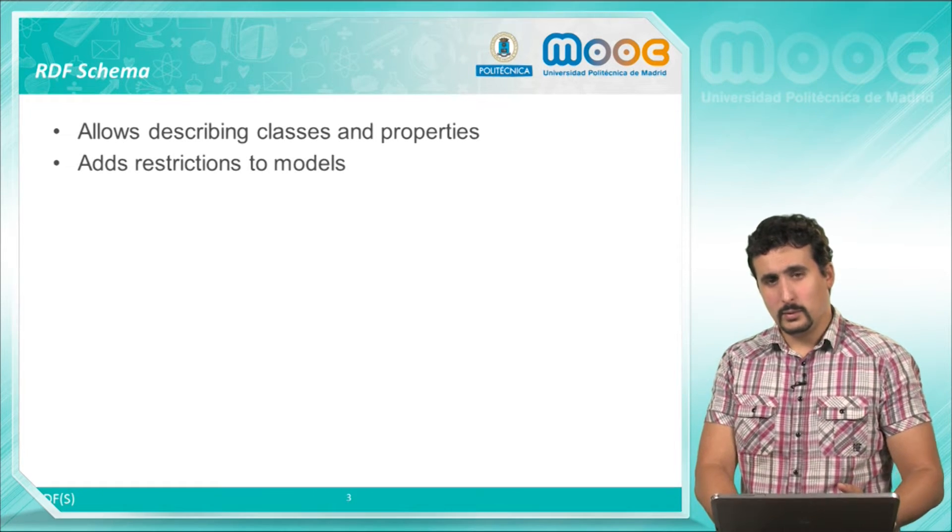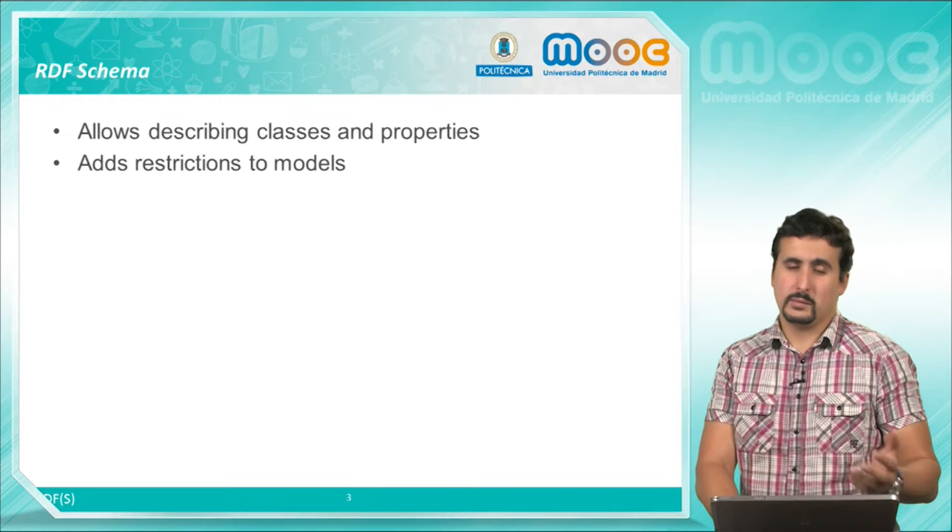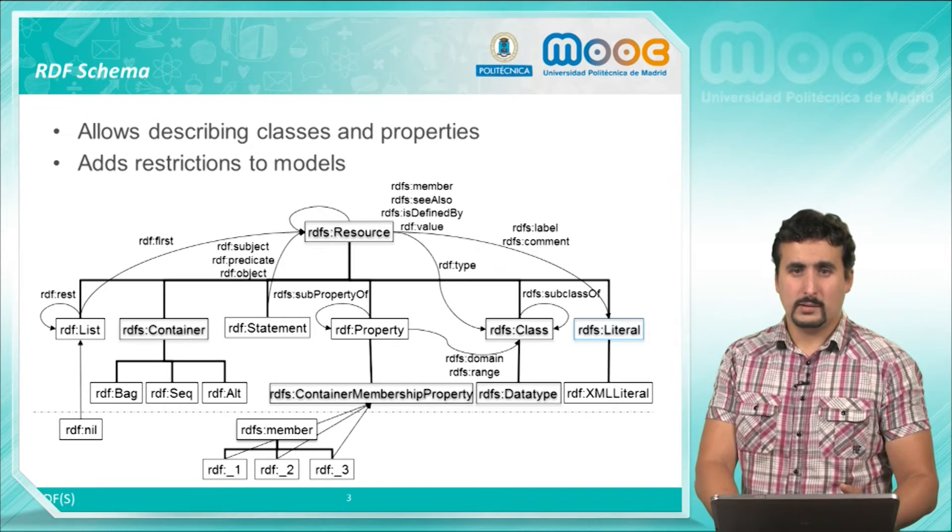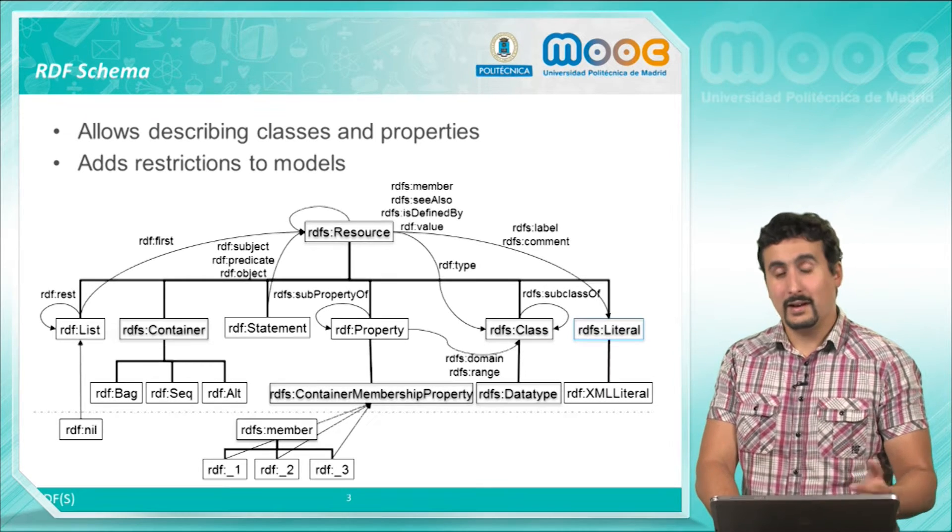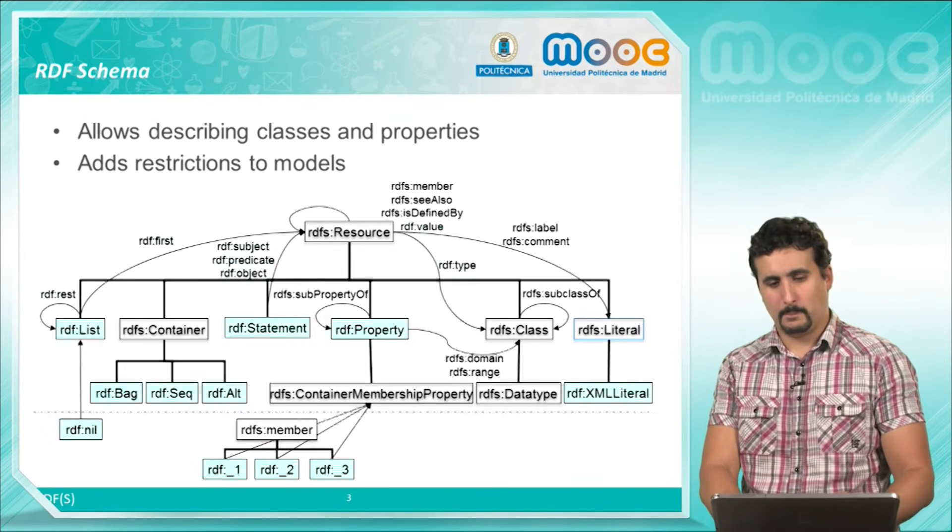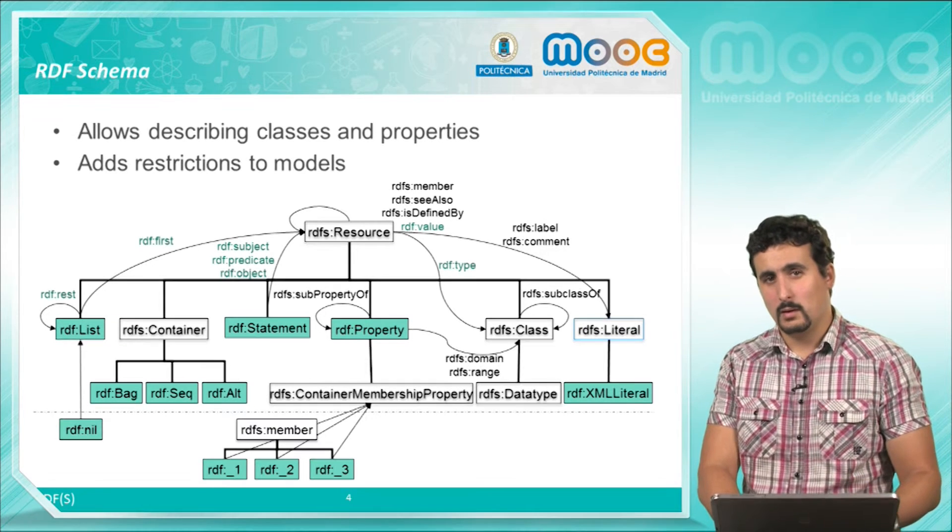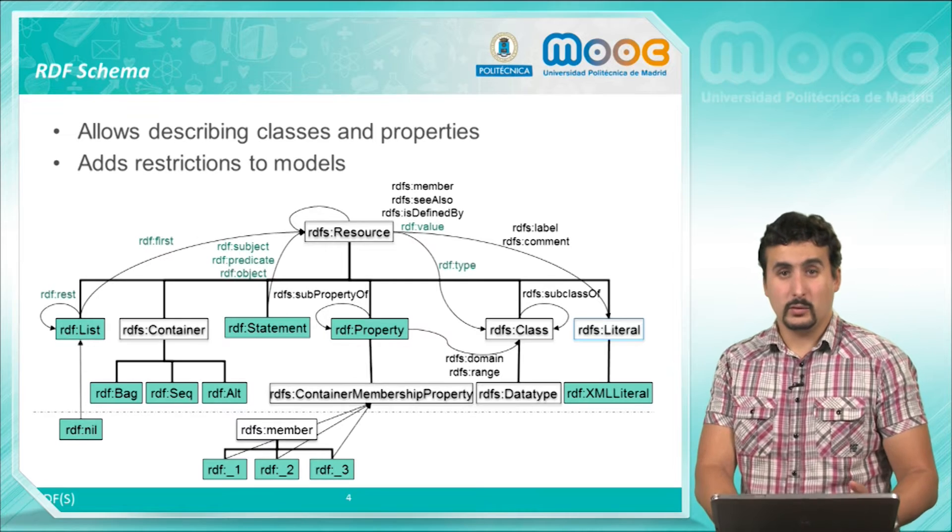It also introduces the possibility of adding some restrictions to our data model. In this example we see an overall picture of the RDF and RDF-S family. Here in green we have the elements belonging to RDF, most of which we introduced in the previous video.